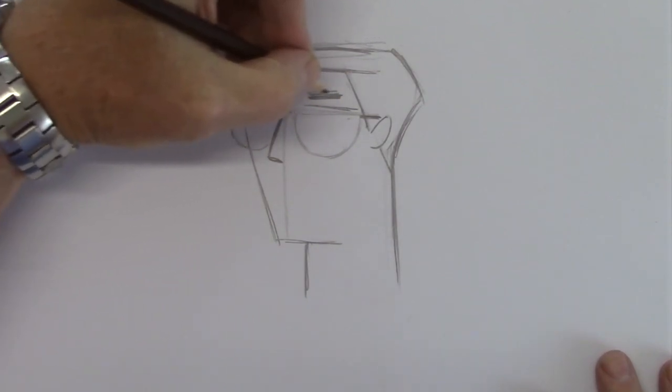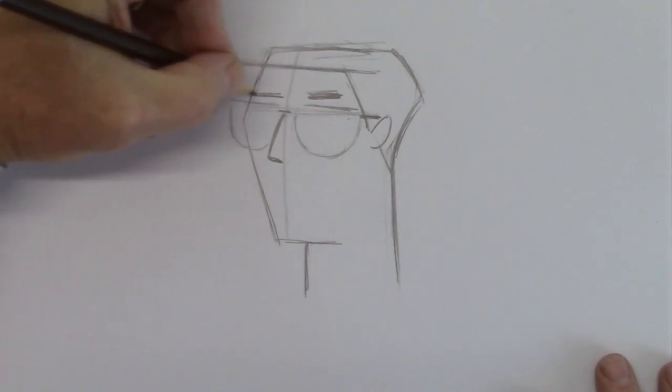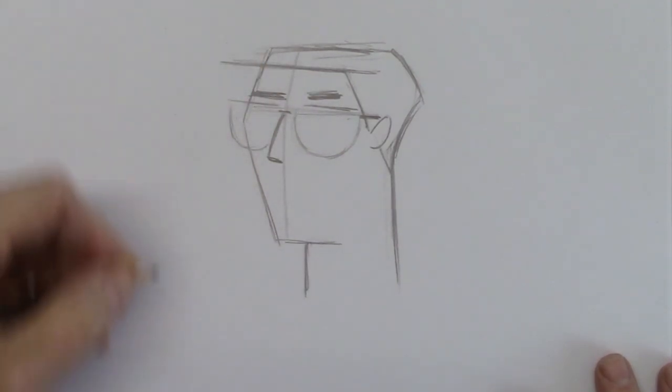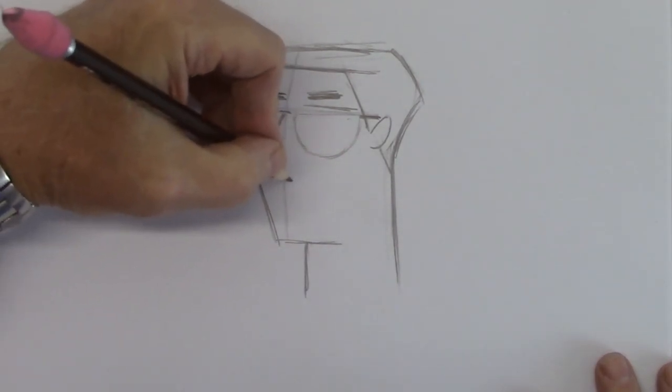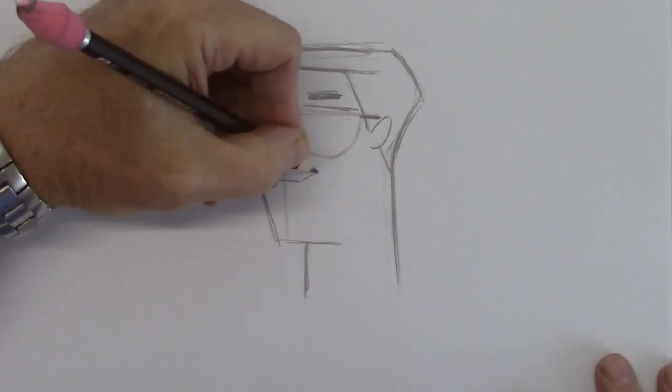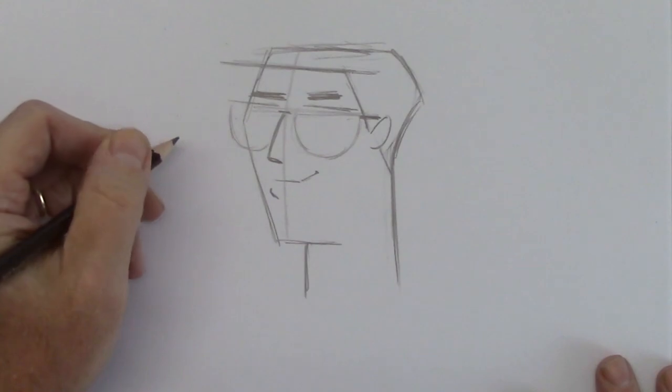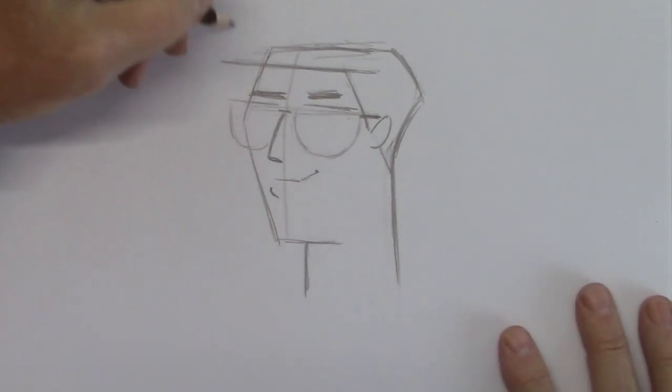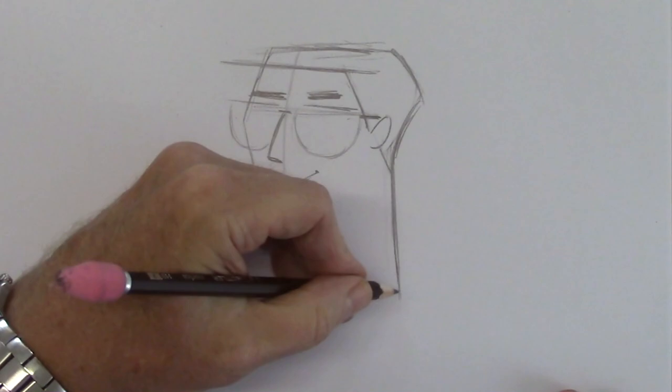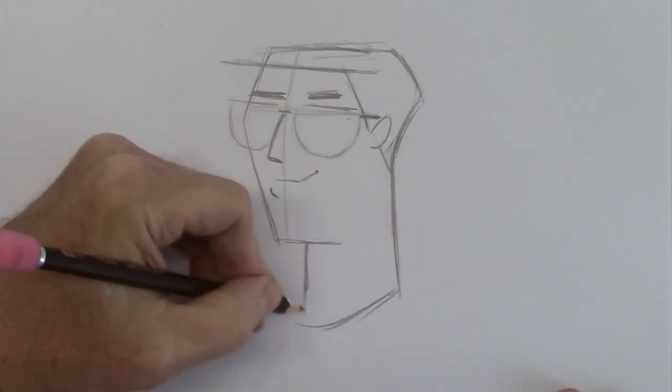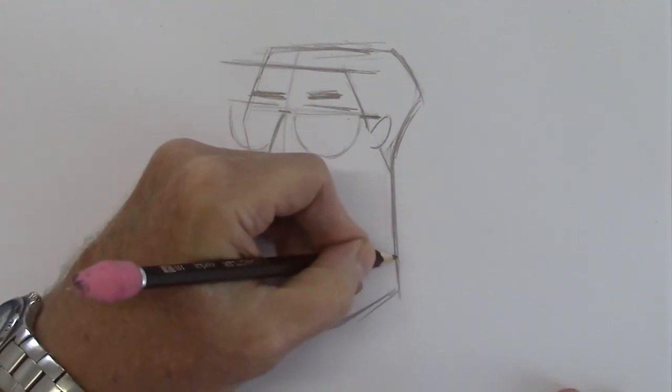We'll give him short, thick eyebrows that are going a little bit down. A little intense. A tiny bit of a smile and bring the upper lip out a little bit. Okay, you ready to finish him up?